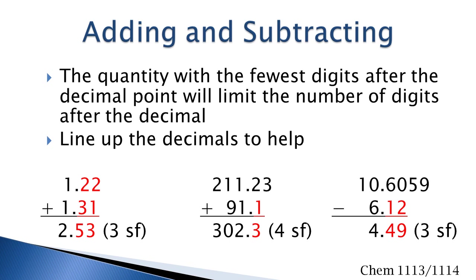Then you can count the numbers — one, two, three, four — and this number has four significant figures. Subtraction follows the same rules. The smallest number of digits after the decimal would be two, from the 6.12, so the answer will be limited to two digits after the decimal and whatever is before the decimal. So this one becomes three significant figures.